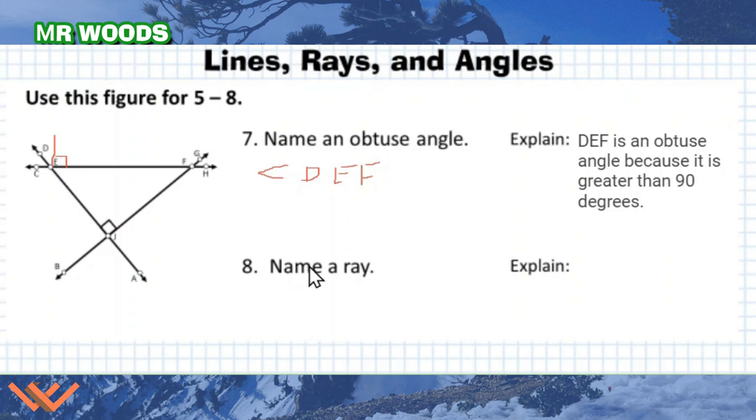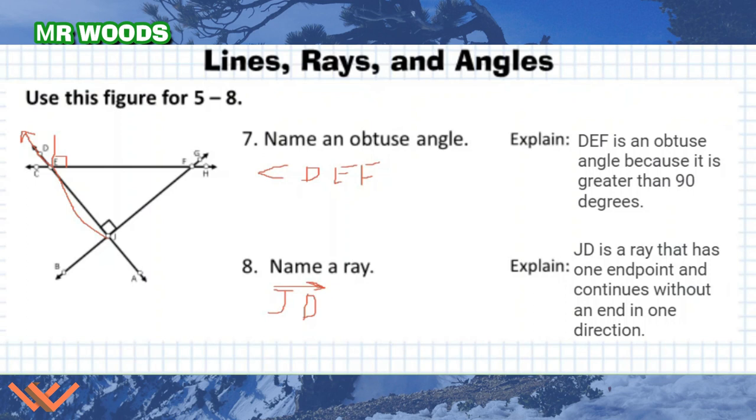Let's take a look at this here. It says name a ray. That might be a little more difficult if you're not paying attention. We can look at this here. I can say JD. I can just put this as symbol for my ray, and I can even draw it. Here's J, there's D. If you notice, it goes right on through there. JD is a ray that has one endpoint and continues without an end in one direction. It's my endpoint J, and D, as you can see, it keeps on, it's continuous right there.